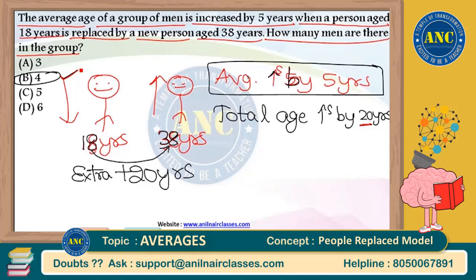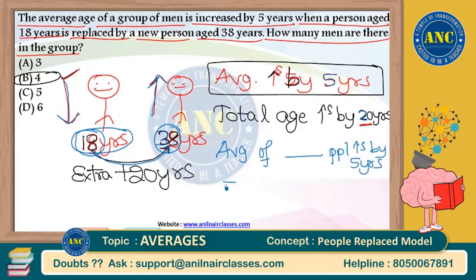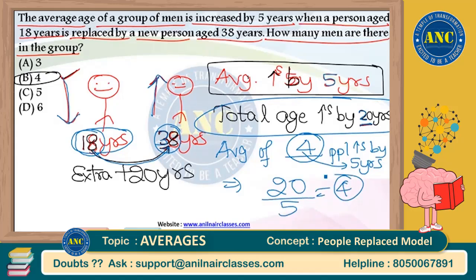How beautiful the logic is — just twist the previous question and you get a new one. Concept remains the same. Think of it this way, Divya: I am 18 years old, I leave the class. My friend aged 38 years comes inside. He brings 20 extra years into the class, so total age increases by 20. Average increases by 5 years. 20 ÷ 5 = 4 people.